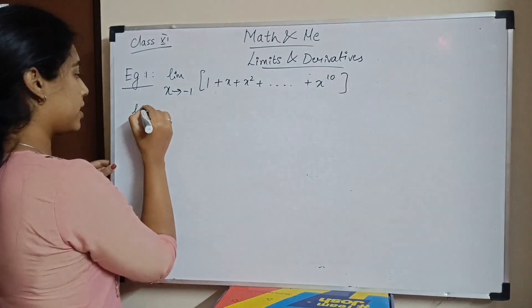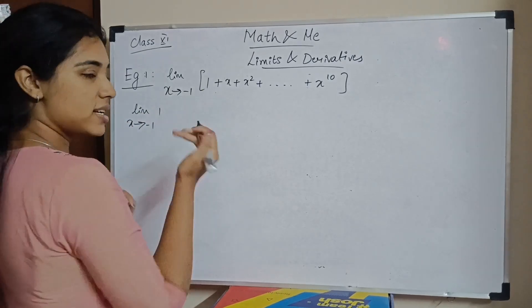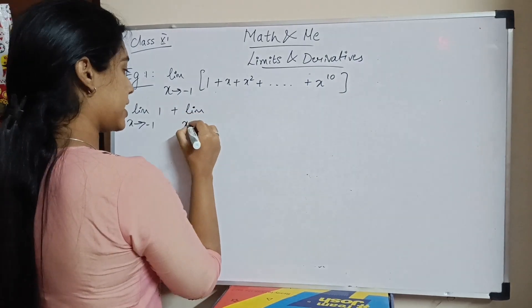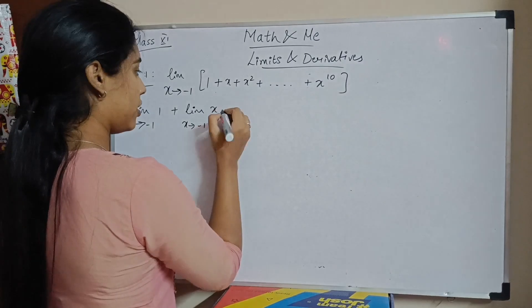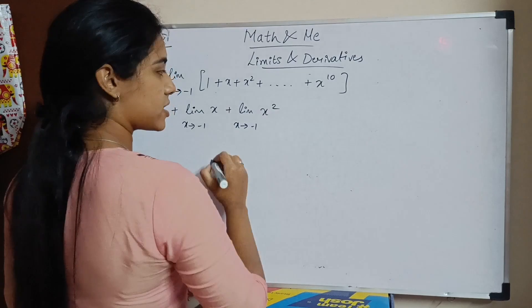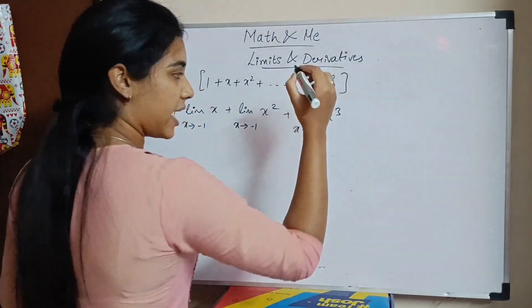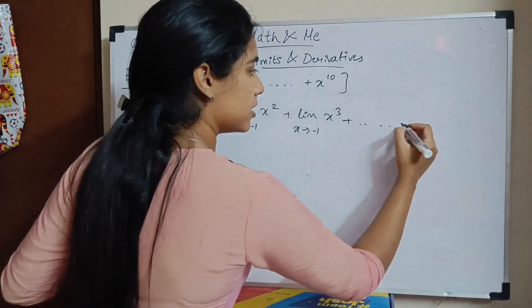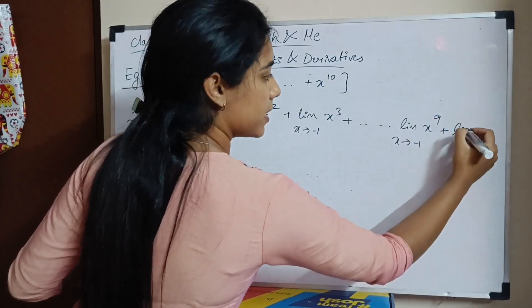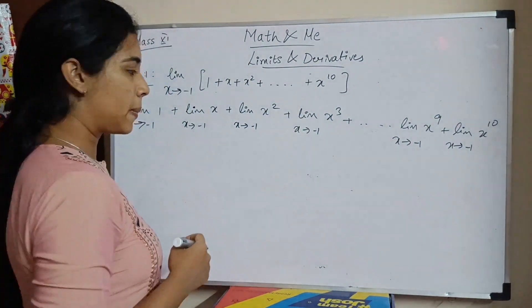We can use the same formula that we just saw. Splitting the limit. What do we do? Limit x tends to minus 1 of 1. 1 is a constant. So it can be taken out of the limit. Limit x tends to minus 1 of x plus limit x tends to minus 1 x square plus I will write two more terms just for clarity. Limit x tends to minus 1 x to the 9 plus limit x tends to the minus 1 x to the 10.